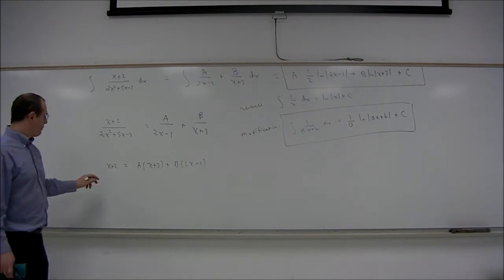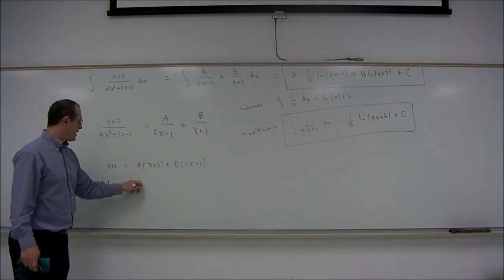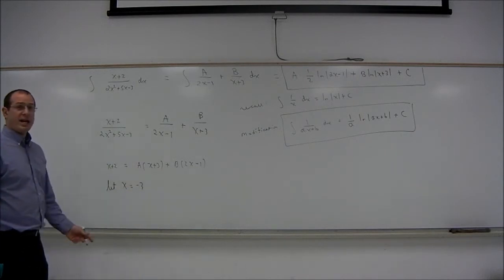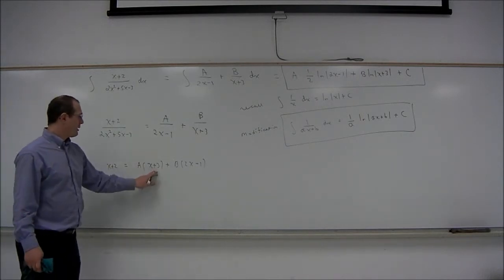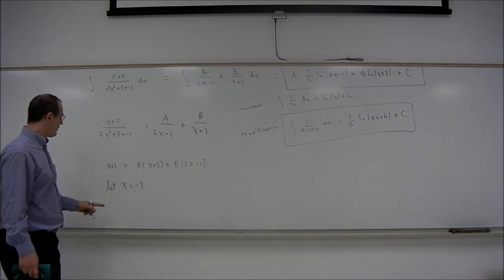Now, to figure out a and b, we can plug certain x values in. For example, if we let x equal negative 3, then the a will be multiplied by 0, and so we'll be left only with b. So if x is negative 3,